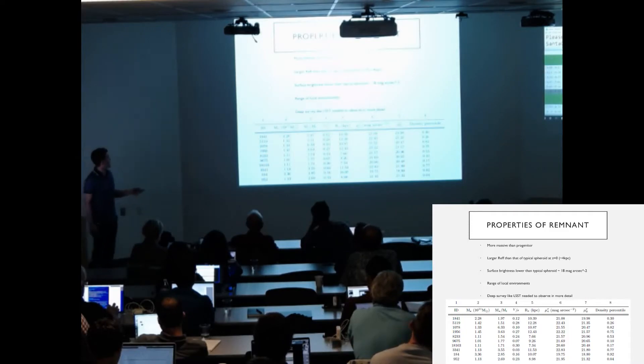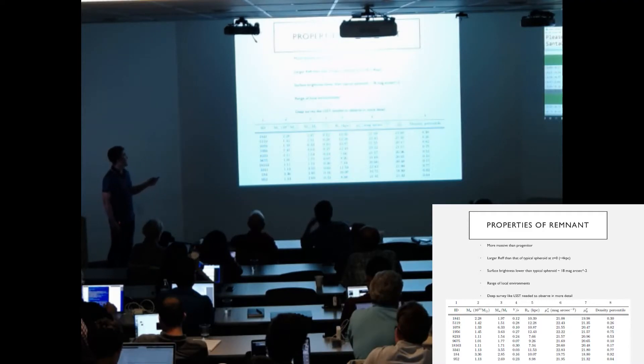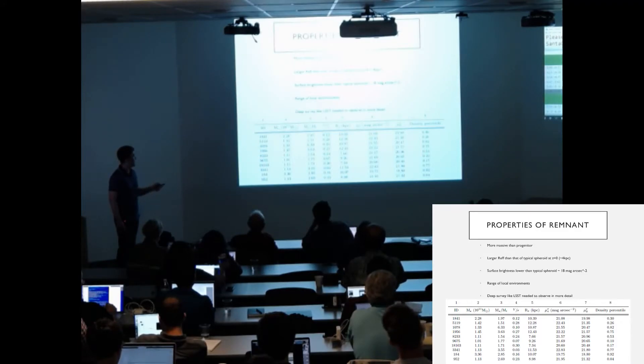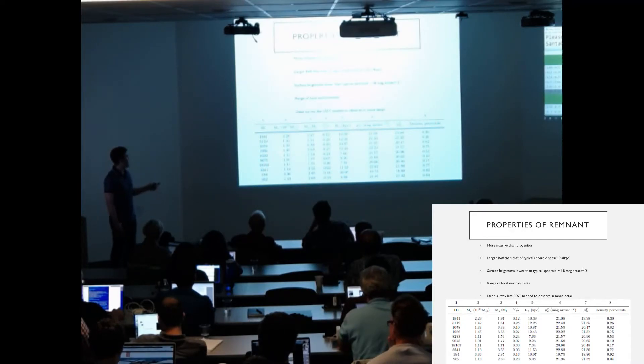So what properties do these remnants have? This table just shows a couple of properties of the remnant of the spheroid at the end. We can see here the mass of the spheroid divided by the mass of the progenitor that formed it, and we can see that in all cases these spheroids are much larger than their initial progenitors. They all have very low V over sigma as we expect. They have large effective radii, typically larger than that of a typical spheroid at z equals zero. They also have surface brightnesses that's lower than a typical spheroid. And they come from a range of local environments, from galaxies in the field to galaxies in clusters. So it's clear that local environment is not what's the cause of these galaxies to be produced. We also think that we need a deep survey like LSST to observe these galaxies observationally.